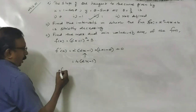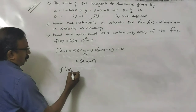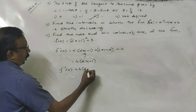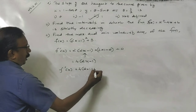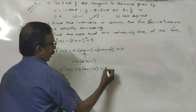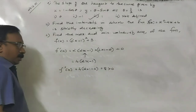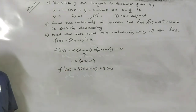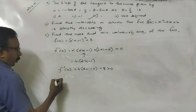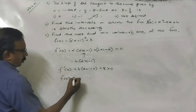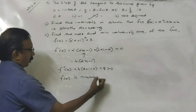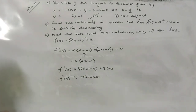Now, find the second derivative f''(x). That is 4 into 2 into 1, so we get 8, which is greater than 0. If the second derivative is greater than 0 (positive), therefore the function is minimum.